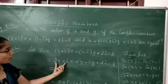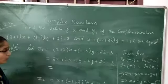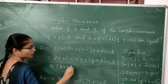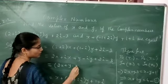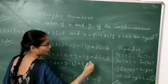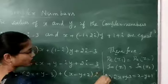Now we are collecting the real and imaginary parts separately. Here the real parts are 2x plus y and minus 3. Then collect the imaginary parts: x minus y plus 2 into i.